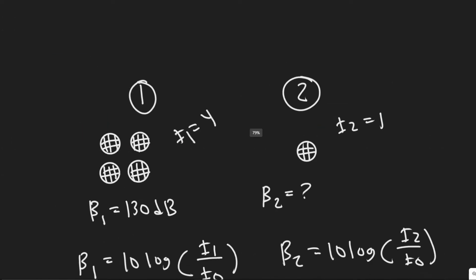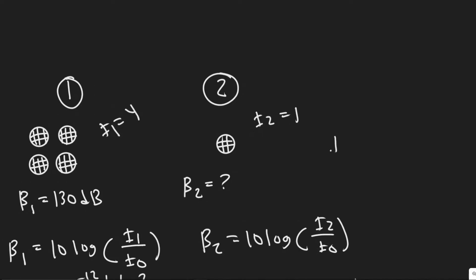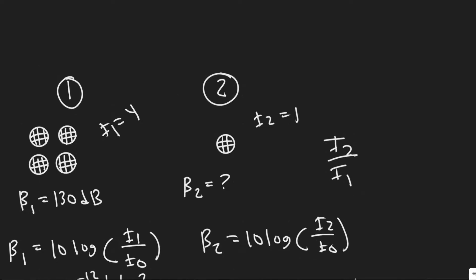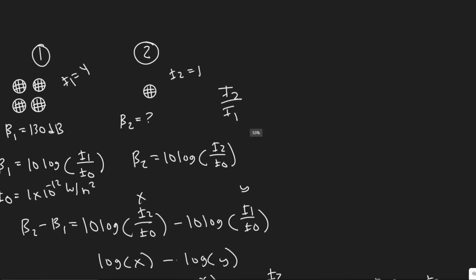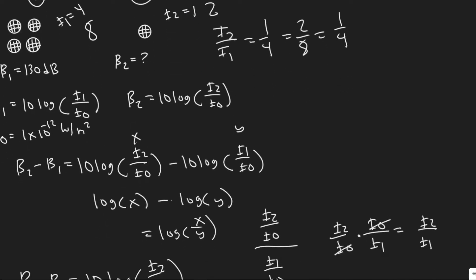Therefore i₂ over i₁, which we need right to plug in down here, is just one over four. We can pick any numbers, right? Assuming this was two for one of these, there's four of them so it would be eight, which is two over eight, which is still just one over four. So basically we just selected one to make it easier.